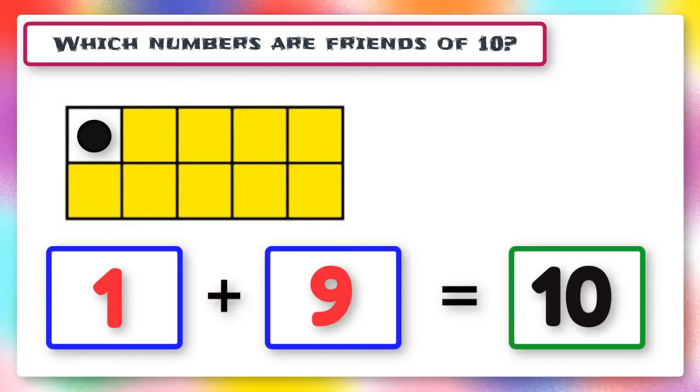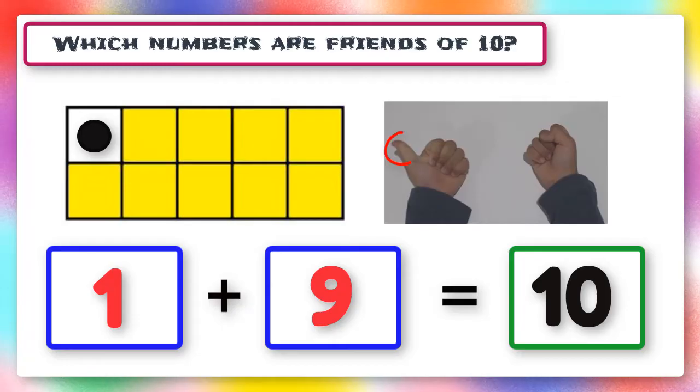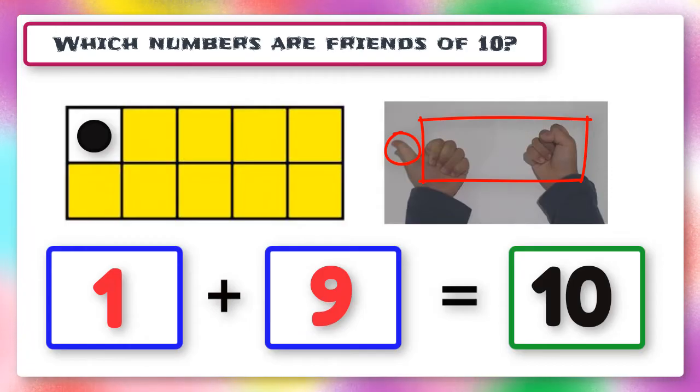This is the same when you use your hands. If you put one finger up, you have 9 fingers that are down. So that also shows you that 1 and 9 are friends of 10. Let's find some more friends of 10.